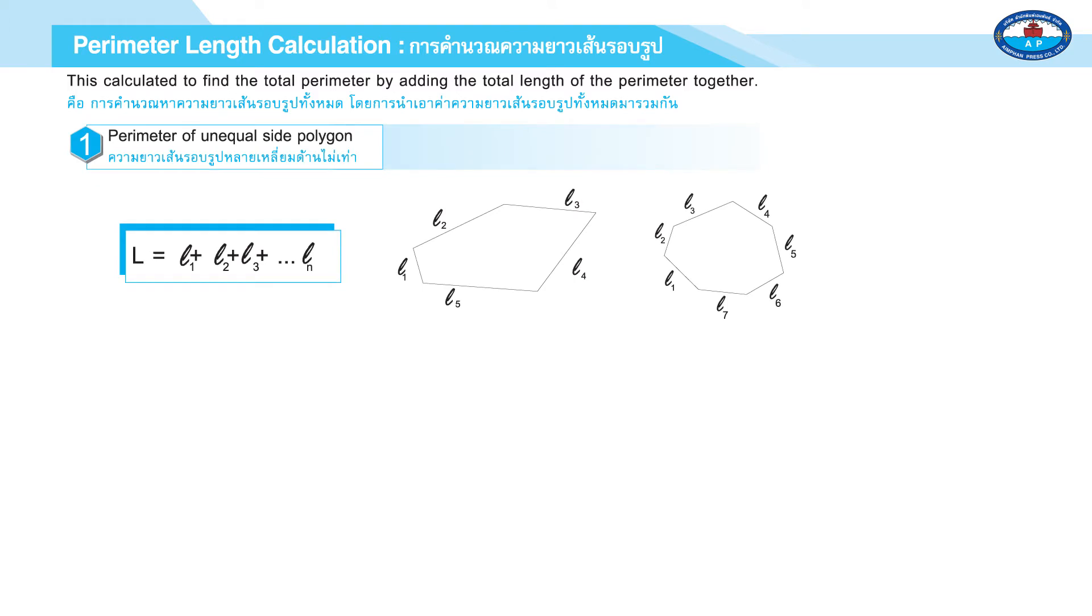1. Perimeter of Unequal Side Polygon: Total length equals L1 plus L2 plus L3 plus Ln.